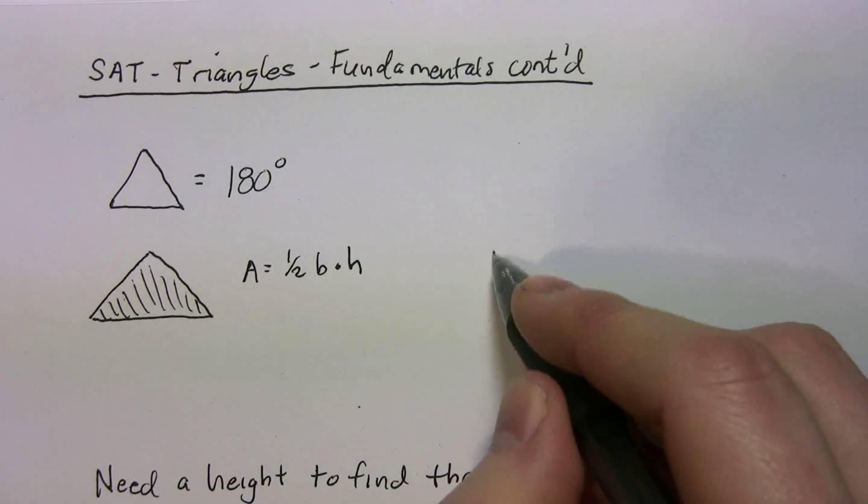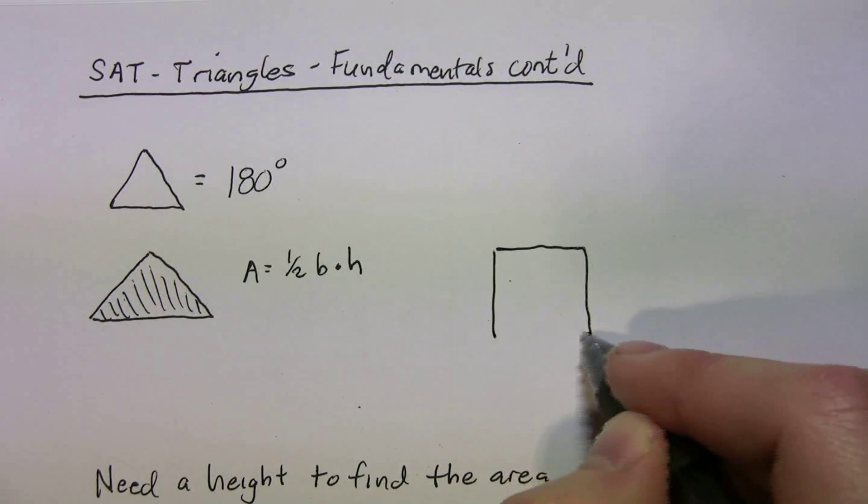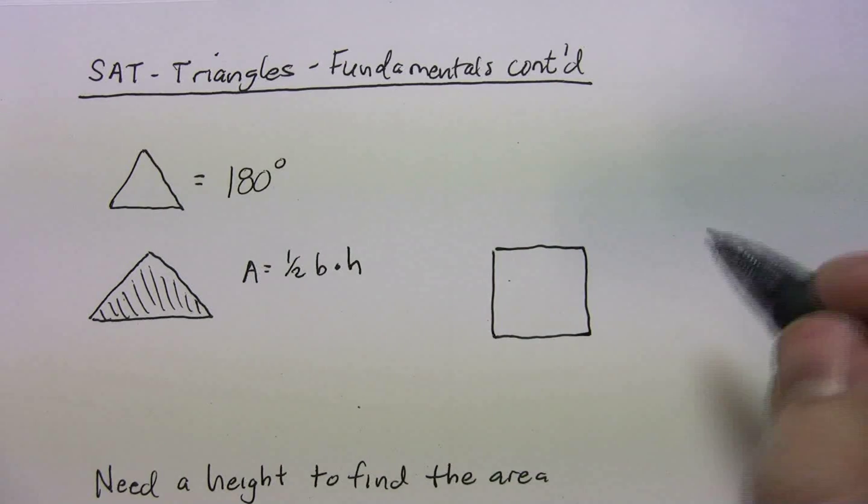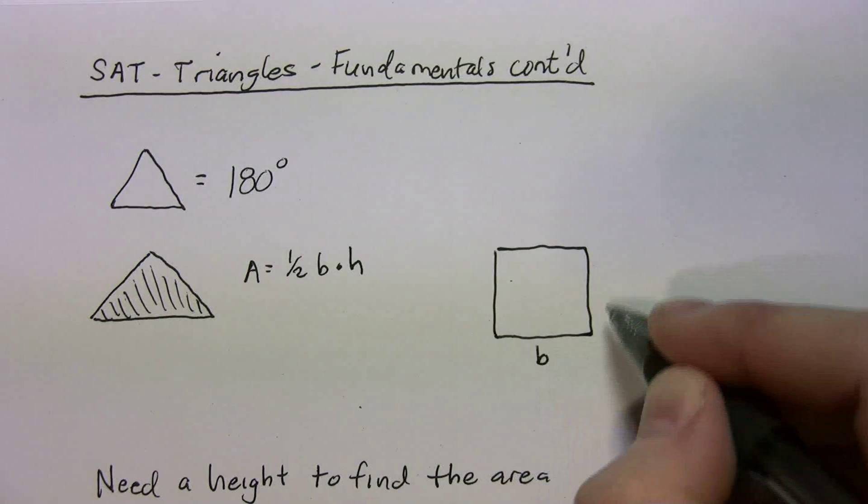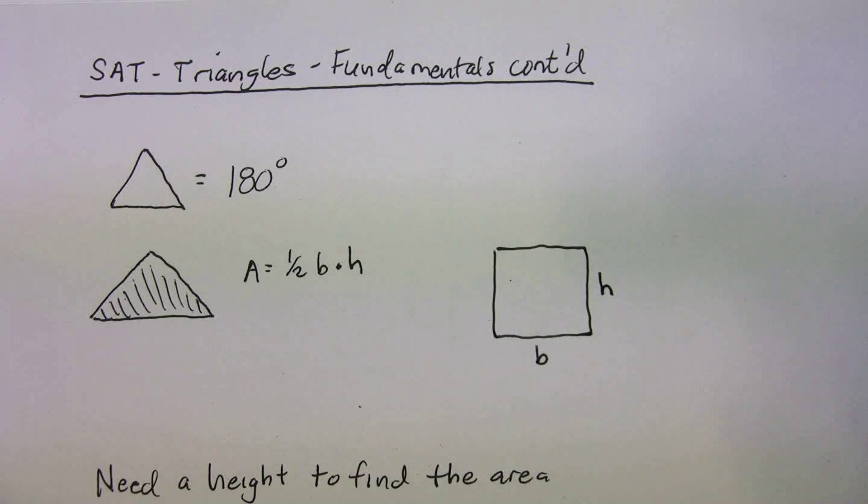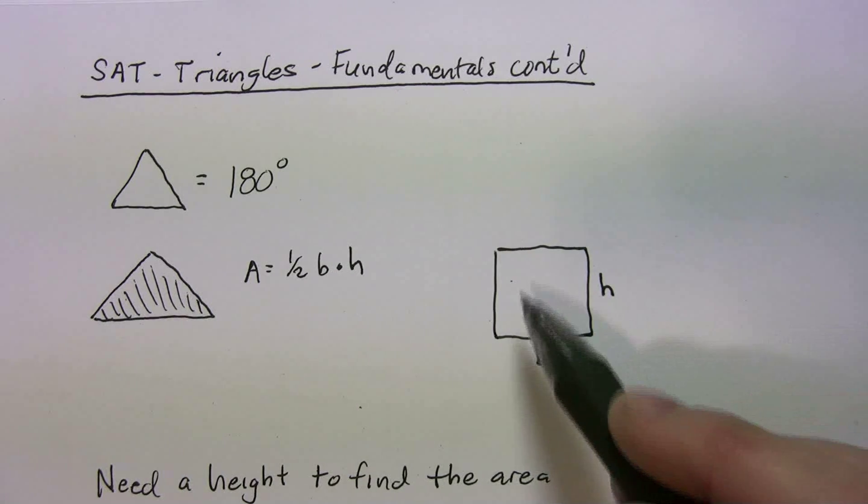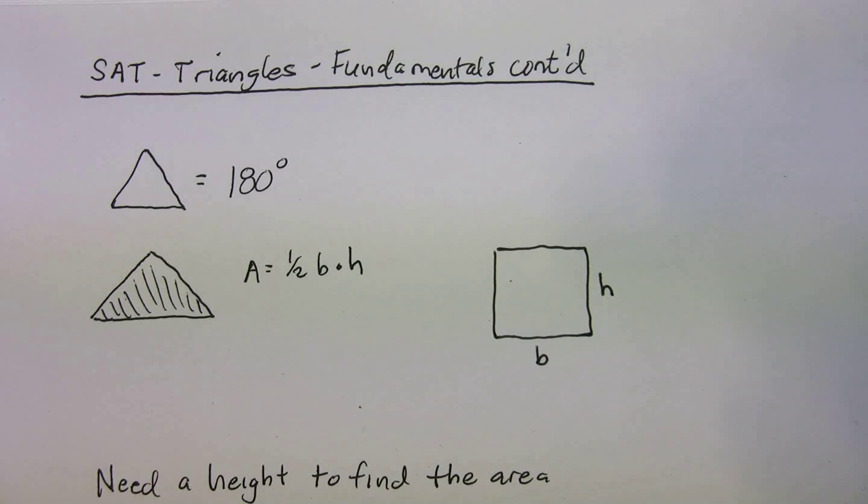So another way to think about that, if you ever forget, just picture a square. Well, a square, let's say it has dimensions b and h, base and height. Well, the area of a square is just base times height, right, or length times width, but I'm using b and h in this case.